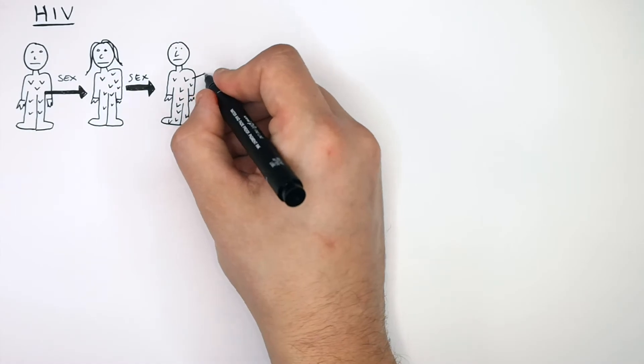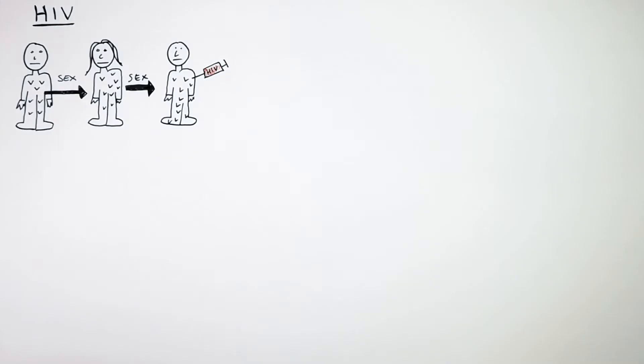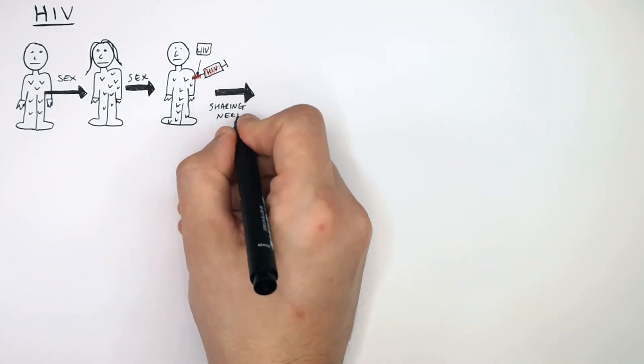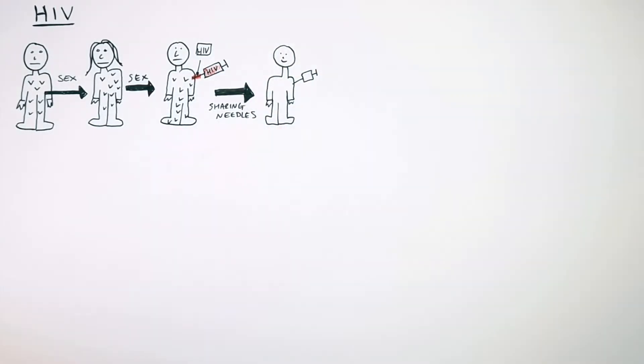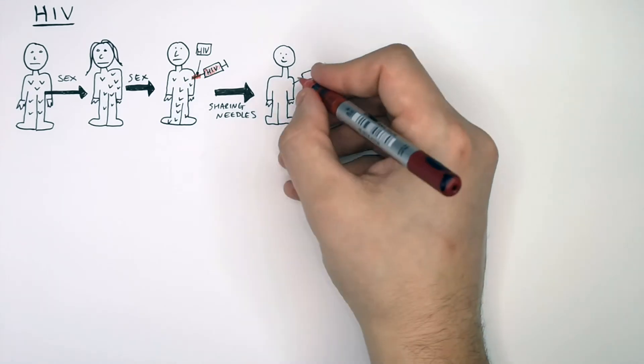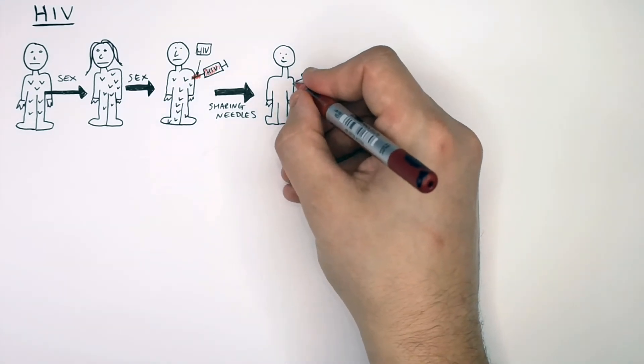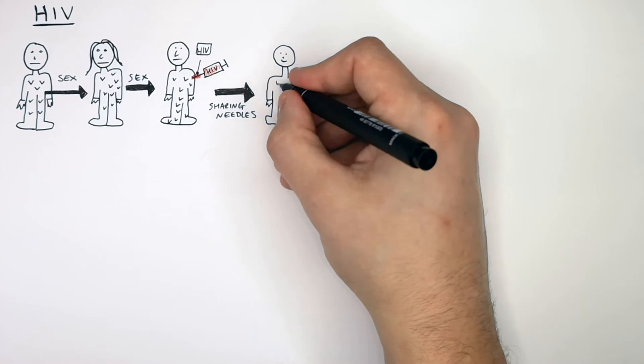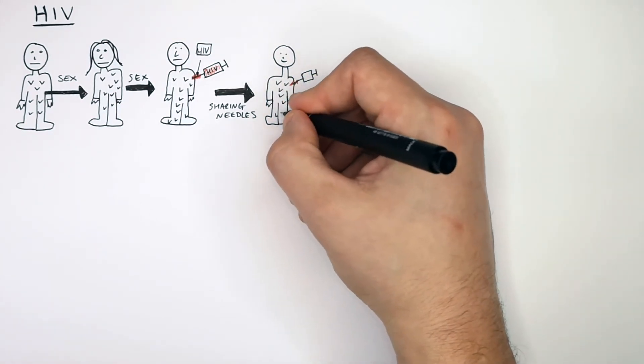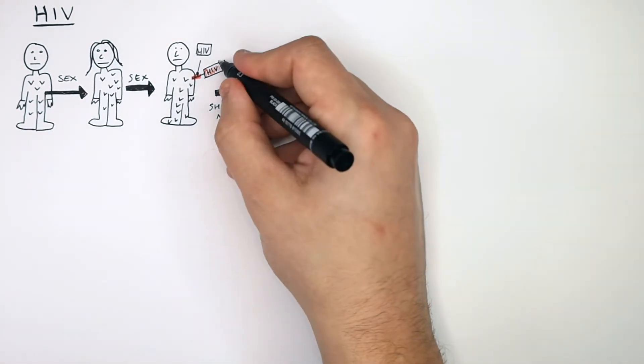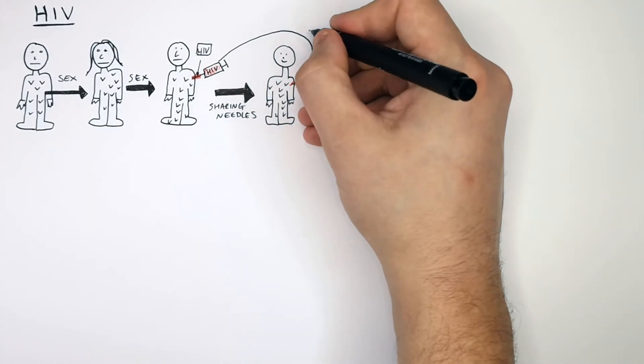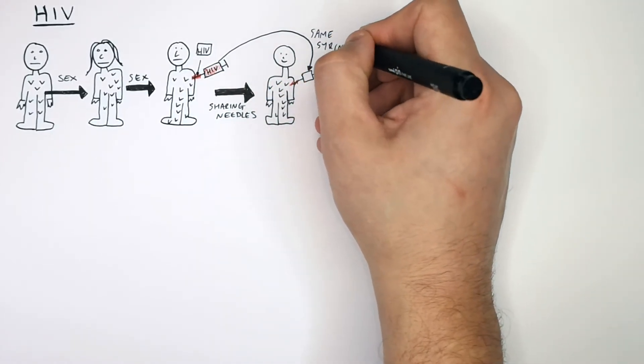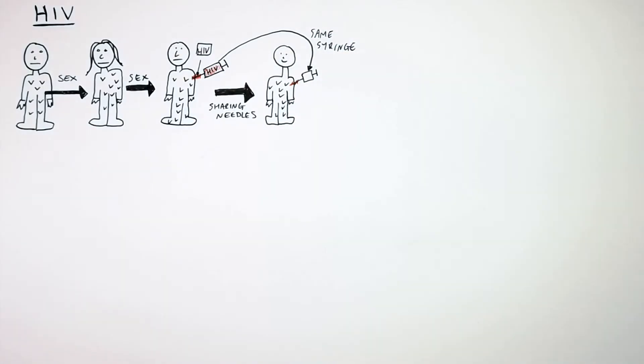So this person here uses a needle and a syringe. They then share that syringe with another person. So if they share this needle, which is now contaminated with blood with HIV in it, and that person then uses the same needle, there's a chance that that person is then going to have the HIV virus injected into their body. If they use the same syringe, they're going to exchange bodily fluids and therefore transmit the HIV virus.